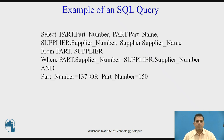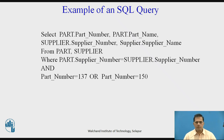Continuing the same SQL query example, this relation shows an example SQL statement used to retrieve data from a database. In this case, the SQL statement is retrieving records from the part table whose part number is either 137 or 150. The statement takes the columns part number, part name, supplier number, and supplier name from the two tables — part and supplier — when the conditions are true.